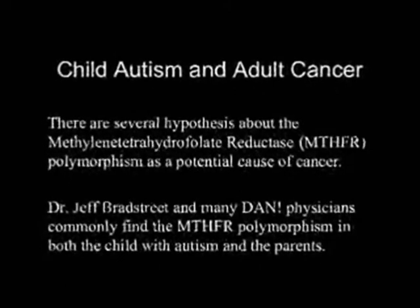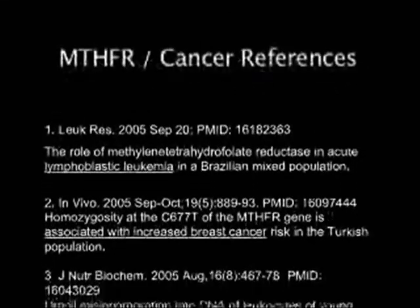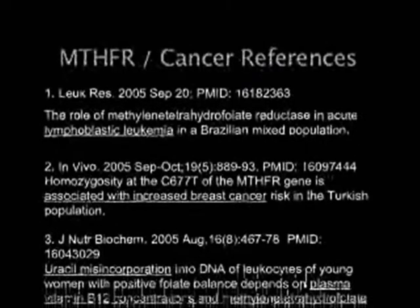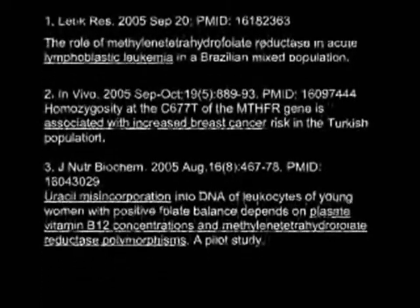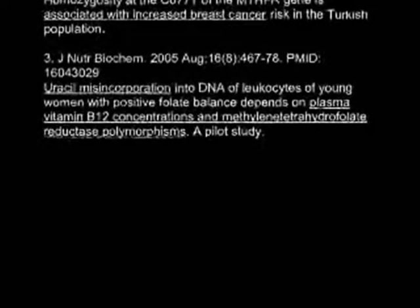There are several hypotheses about the methylene tetrahydrofolate reductase, MTHFR polymorphism, as a cause of cancer. We see MTHFR polymorphism very commonly in autism in both the child and the parents. With a possible transmethylation problem that we see so often in this generation, I think the first step in becoming more healthy and to easily reduce a major risk factor is to remove any amalgam fillings.